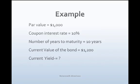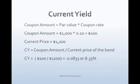Example: let's assume that the par value of the bond is $1,000, the coupon interest rate is 10%, the number of years to maturity is 10 years, and the current value of the bond is $1,200. The question is: what is the current yield of the bond?